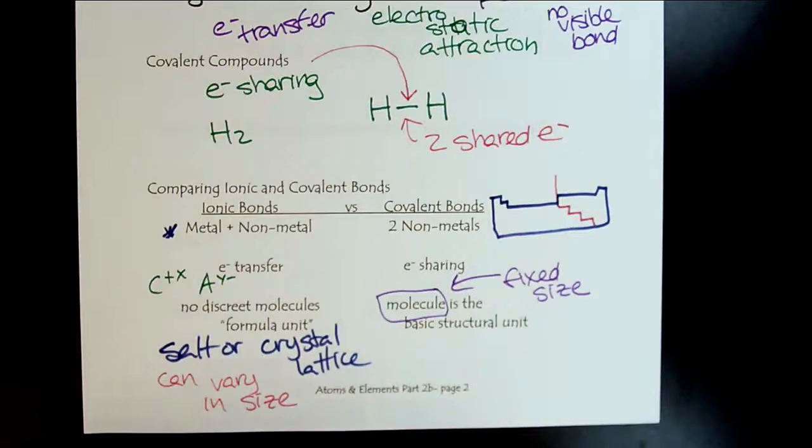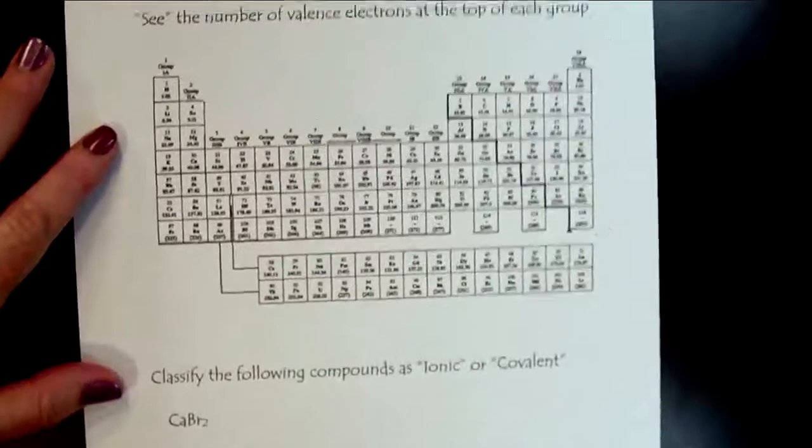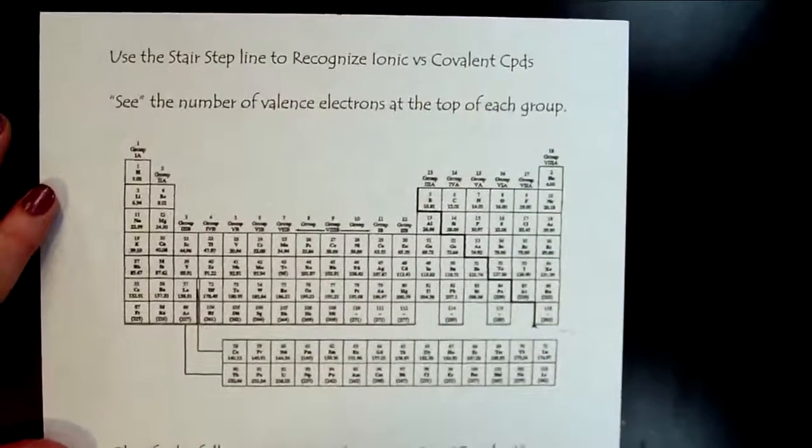So there's an introduction to valence electrons and how we can use our understanding of them to discern between ionic and covalent compounds. And then on this last page here, let's look and practice this to make sure we're comfortable applying this knowledge.